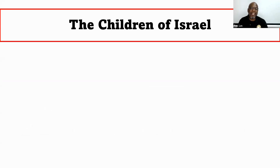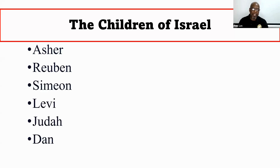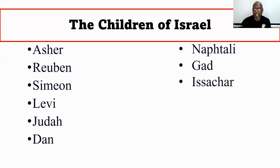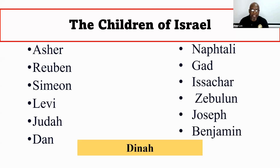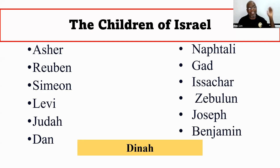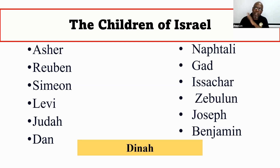The children of Israel that we'll be meeting tonight: we're going to meet Asher, Reuben, Simeon, Levi, Judah, Dan, Naphtali, Gad, Issachar, Zebulun, Joseph, and Benjamin. And of course, Dinah. These are the boys from then to now, and in the future till the Book of Revelation comes to a close. They have taken center stage around the world.